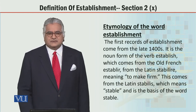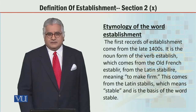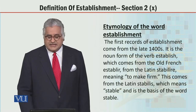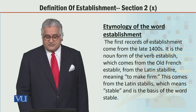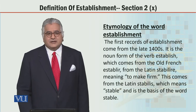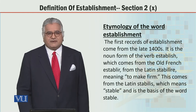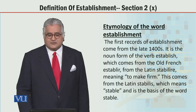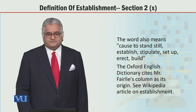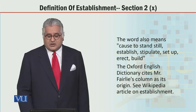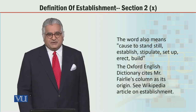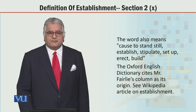Now let's move on to discuss something very nice — what is the etymology of the word 'establishment', what is its origin? My dear students, the first recorded use of this word is found in the late 1400s. It is the noun from the verb 'establish', which comes from the Old French word 'stabilir', from the Latin 'stabilire', meaning 'to make firm'. This comes from the Latin 'stabilis', which means 'stable' and is the basis of the word 'stable'. The word establishment also carries the meanings: cause to stand still, establish, stipulate, set up, erect, and build, et cetera.